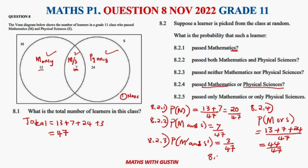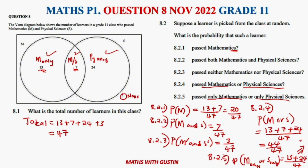Question 8.2.5 asks for those who passed only Mathematics or only Physics — not both. That means Mathematics only (13) and Physical Science only (24), so it's 13 plus 24 over 47, which gives us 37 over 47.